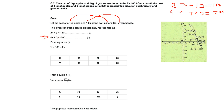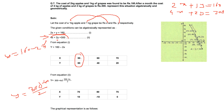Rewrite the equations: Y = 160 − 2X and Y = (300 − 4X)/2. For the first equation, put X = 50: Y = 160 − 100 = 60, giving point (50, 60). Put X = 60: Y = 160 − 120 = 40, giving point (60, 40). For the second equation, put X = 70: Y = (300 − 280)/2 = 10, giving point (70, 10). Put X = 80: Y = (300 − 320)/2 = −10, giving point (80, −10).